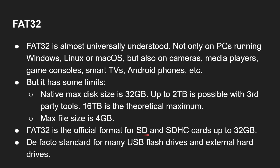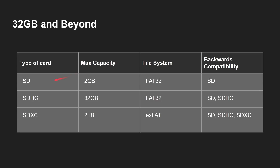FAT32 is the official format for SD and SDHC cards — SD up to 2 gigabytes, SDHC up to 32 gigabytes. It's also the de facto standard for many USB flash drives and even some external hard drives. Looking at the SD card format: SD cards originally up to 2 gigabytes use FAT32; SDHC up to 32 gigabytes also uses FAT32. Once you go over 32 gigabytes, you have SDXC, which supports up to 2 terabytes and uses exFAT. Notice that when you get a bigger SD card, the file system actually changes — and that's important, because a 32 gigabyte card might work in a particular camera or TV, and then you put in a bigger one and it doesn't work, and it might be because of the file system difference.